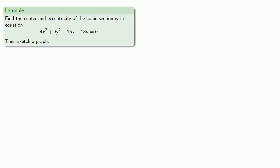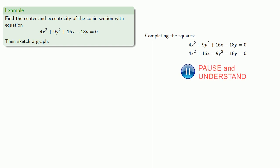For example, let's find the center and eccentricity of the conic section with equation 4x² + 9y² + 16x - 18y = 0, and then sketch a graph. We'll complete our squares and rearrange this so our x terms are together and our y terms are together. It will be convenient to factor out the coefficients of our x squared and our y squared, so we'll factor 4 from our x terms and 9 from our y terms.